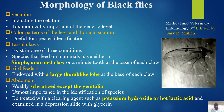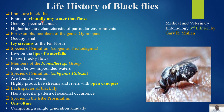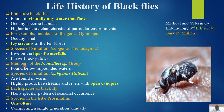Immature black flies are found in virtually any flowing water, but each species occupies specific habitats with particular characteristics. For example, members of the genus Gymnopais occupy small icy streams of the far north; species of the Simulium subgenus Clogmia inhabit the lips of waterfalls and swift rocky flows; members of the S. noelleri species group are found below impounded waters; and species of the Simulium subgenus Eusimulium are found in productive streams and rivers with open canopies. Each species of black fly has a specific pattern of seasonal occurrence.